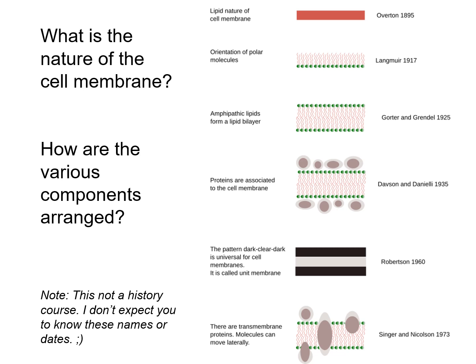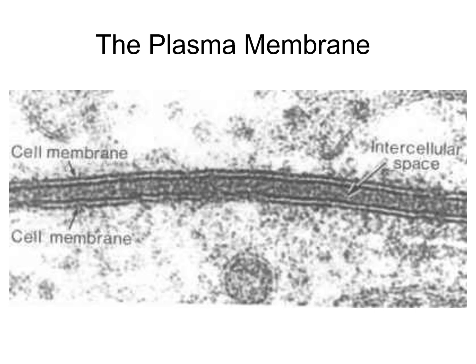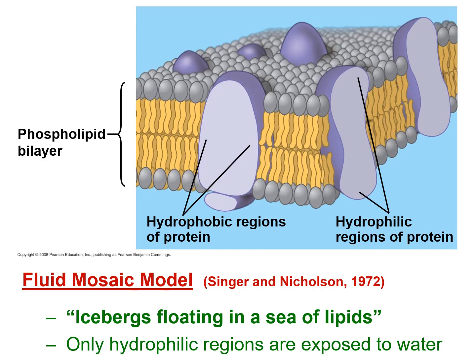In 1973, Singer and Nicholson came up with a model that pleased everyone and made a lot of sense. They showed that the proteins and phospholipids collected from membranes fit together with proteins embedded into the membrane, with some peripheral proteins attached to the outside. This image shows two plasma membranes — we can see those two dark lines representing the hydrophilic heads and the space between the cells. That intercellular space would be filled with proteins of the extracellular matrix, acting as a glue to hold the cells together.